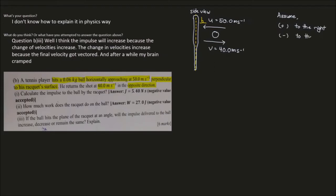Once we've decided to follow this sign convention, we need to modify the signs. The initial velocity is pointing to the left, which is the negative direction, so we attach a negative sign: initial velocity is negative 50 meters per second. The final velocity is positive 40 meters per second.